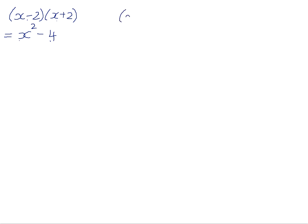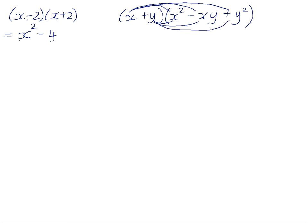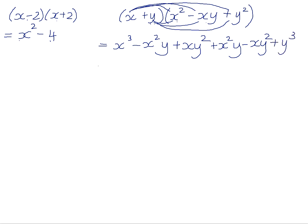For example, something like (x plus y)(x squared minus xy plus y squared). If we apply the distributive law and multiply x by all the terms and y by all the terms: x times x squared is x cubed; x times negative xy is negative x squared y; x times positive y squared is positive xy squared; y times x squared is positive x squared y; y times negative xy is negative xy squared; and y times y squared is positive y cubed. Tidying up: the x squared y terms cancel and the xy squared terms cancel, leaving us with x cubed plus y cubed.